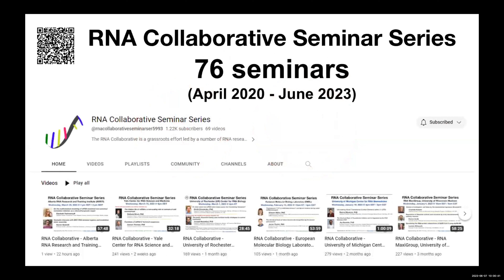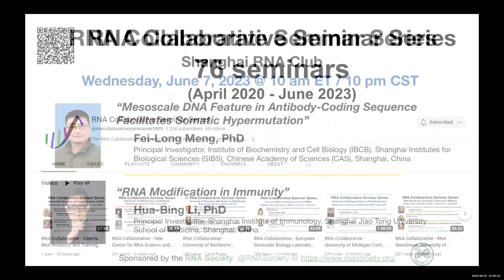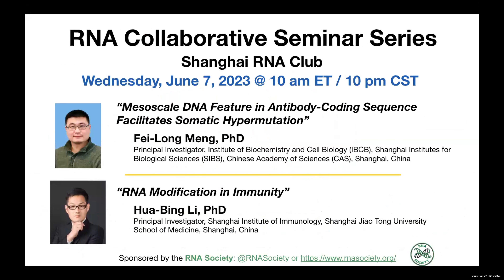Since 2020, we have already had 70 seminar series with very nice talks. Today we have invited two great speakers. The first is Fei-Long Meng from the Chinese Academy of Sciences. He will tell us about mesoscale DNA features in antibody coding sequences that facilitate somatic hypermutation. Fei-Long, you can start now.